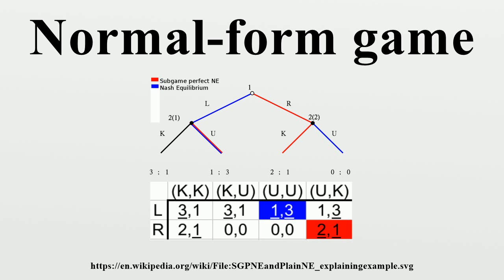For example, if player 1 plays top and player 2 plays left, player 1 receives 4 and player 2 receives 3. In each cell, the first number represents the payoff to the row player, and the second number represents the payoff to the column player.